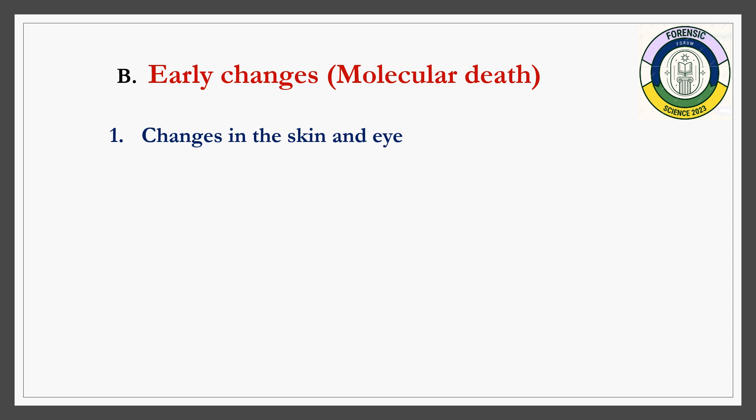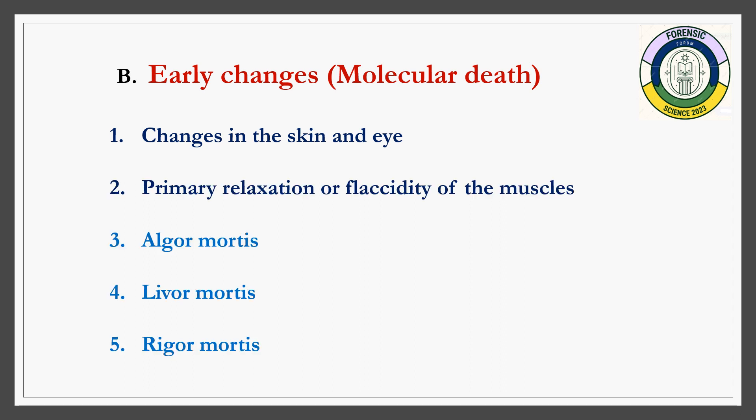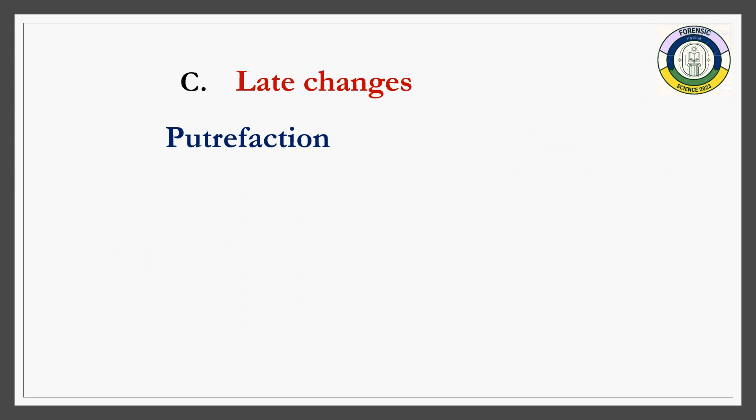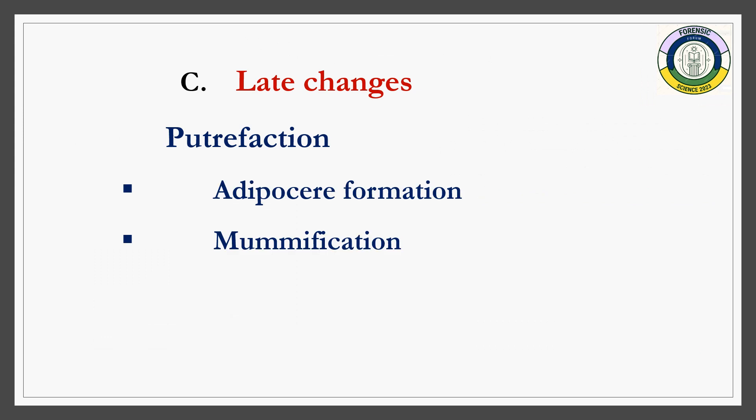Molecular death is the death of all individual cells and biomolecules in the body. It includes changes in the skin and eye, primary relaxation of the muscles, algor mortis, livor mortis, and rigor mortis. Changes in the eye include dilated pupils after death and a black line on the sclera — called tache noire — when the eyelid remains open for about three to four hours. Late changes include putrefaction, with two modifications: adipocere formation and mummification.